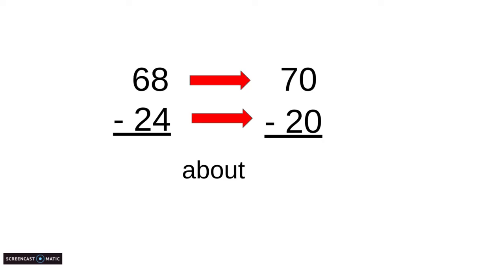It's going to estimate to be, let's see, 0 minus 0 equals 0, 7 minus 4 equals 50. So 68 minus 24 is estimated to be about 50.